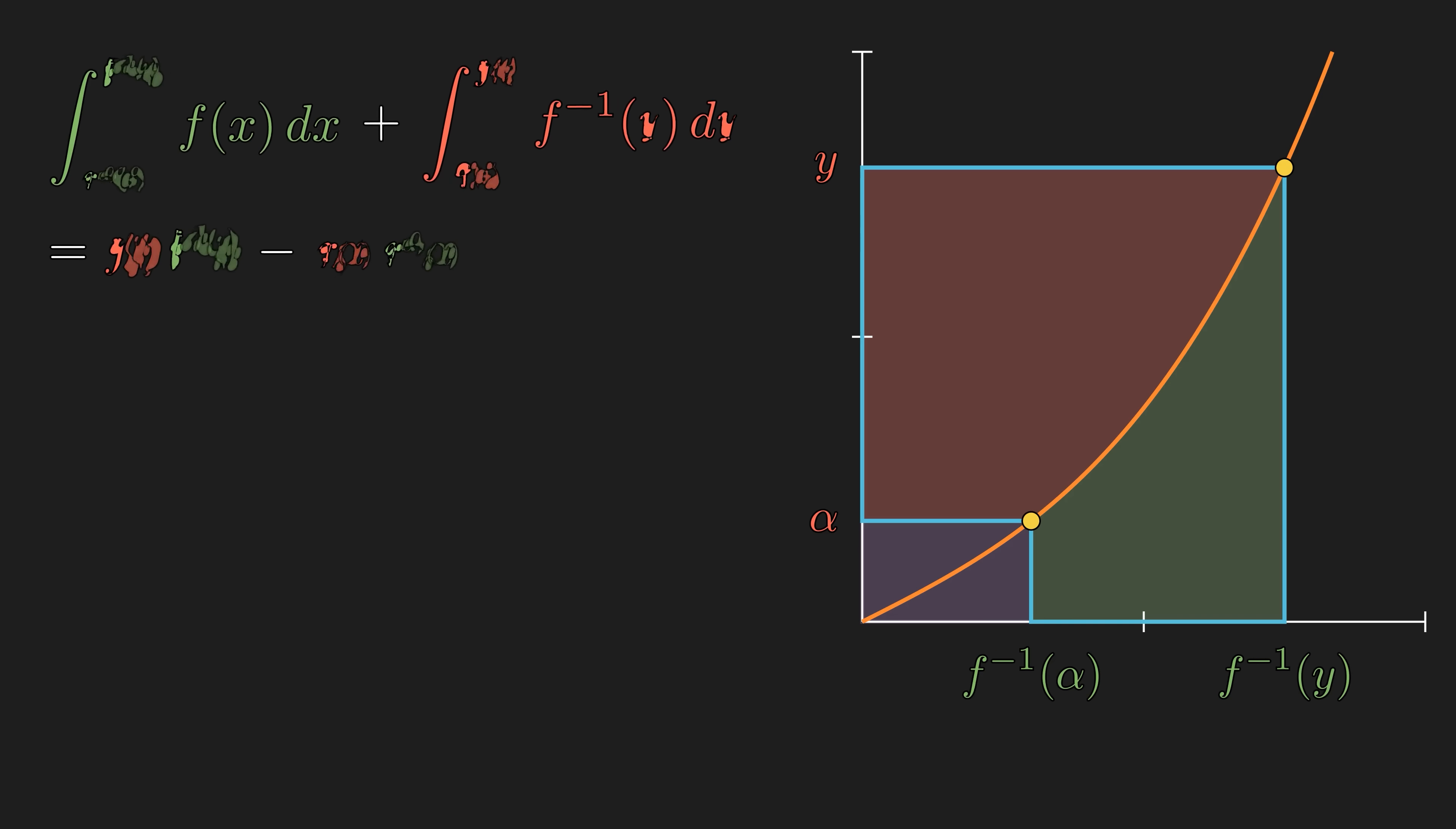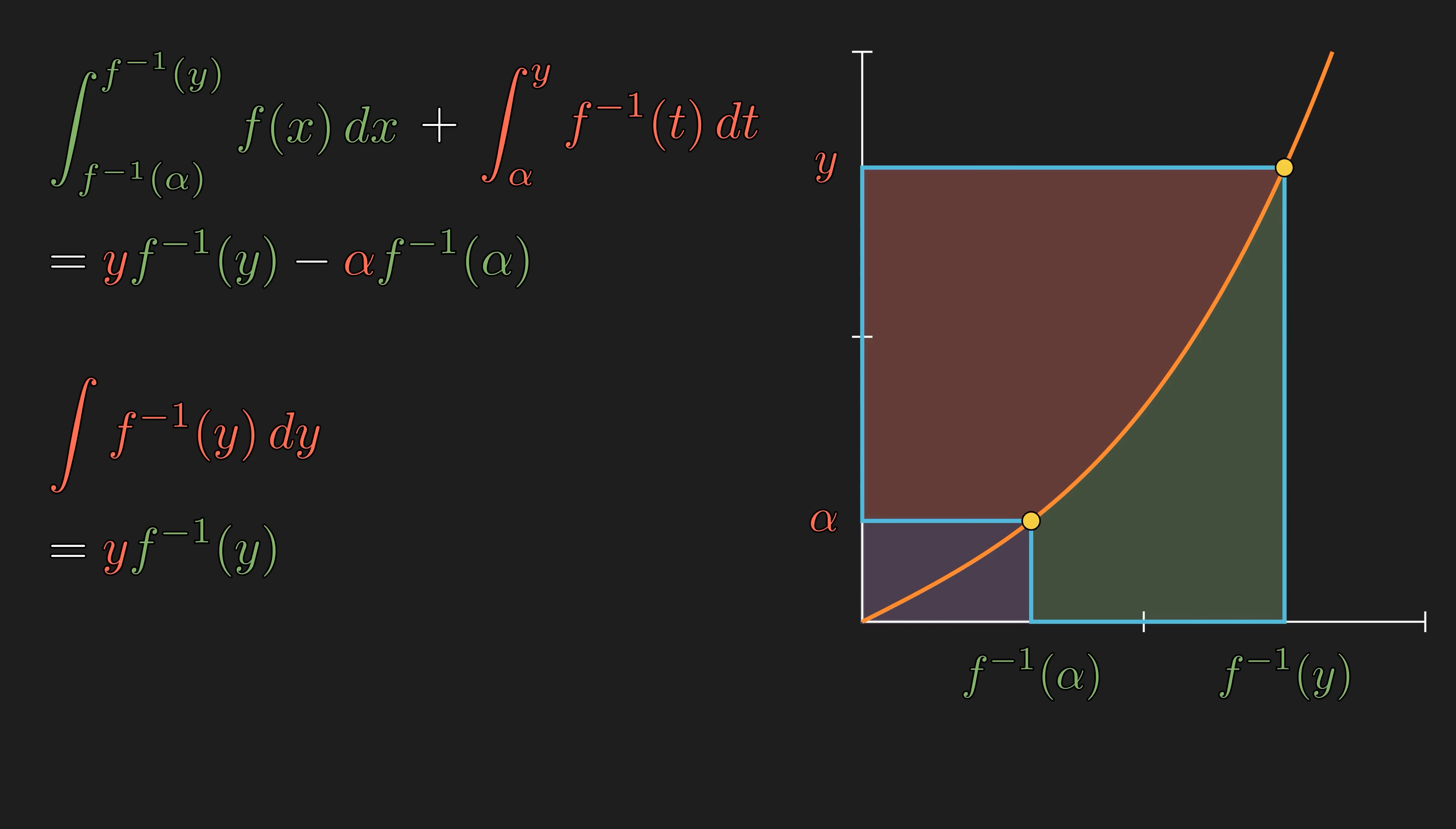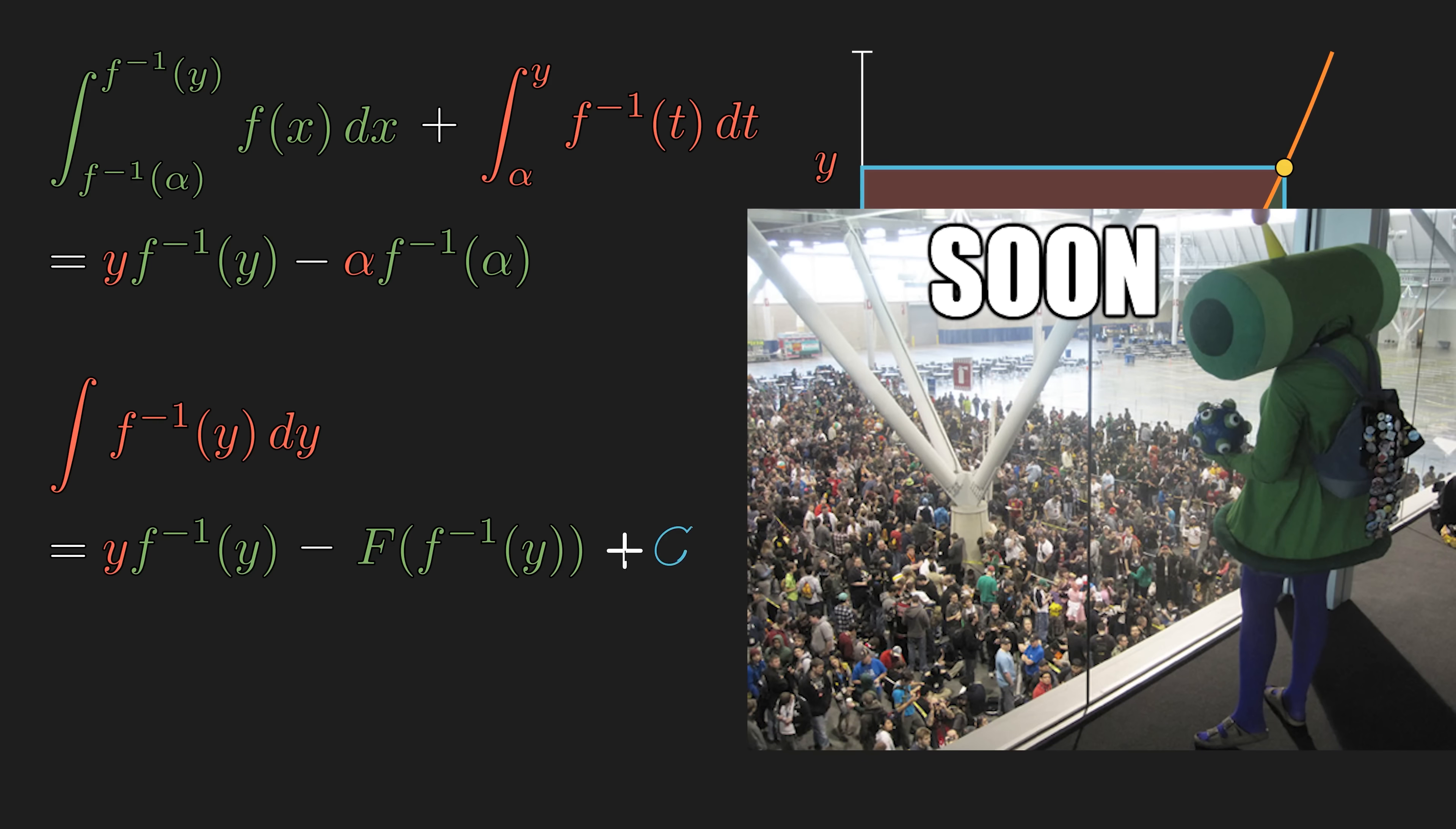So, once we make the substitution in the equality, the red expression is the same as the antiderivative of f inverse, which is equal to y times f inverse of y minus the integral of f evaluated at the f inverse of y. And everything else that depends on the constant lower limit, we can lump it up into a constant.